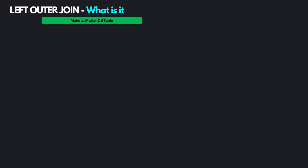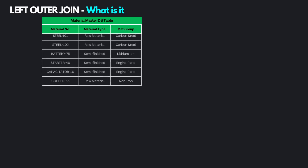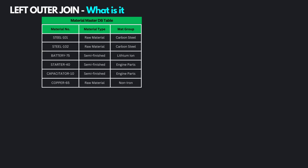In order to understand what left outer joins are, it is best to look at an example. Consider a database table storing material master information, having the columns material number, material type and material group. As an example, the material Steel 101 has the material type raw material and the material group carbon steel.